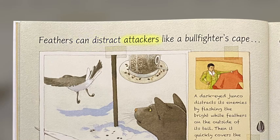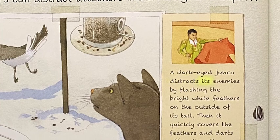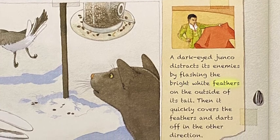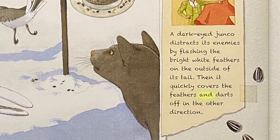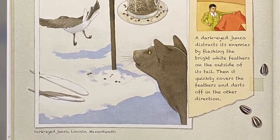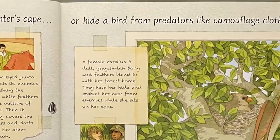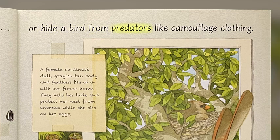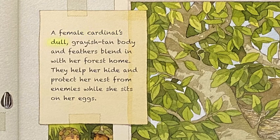Feathers can distract attackers like a bullfighter's cape. A dark-eyed junco distracts its enemies by flashing the bright white feathers on the outside of its tail, then quickly covers the feathers and darts off in the other direction. Or hide a bird from predators like camouflage clothing. A female cardinal's dull, grayish-tan body and feathers blend in with her forest home, helping her hide and protect her nest from enemies while she sits on her eggs.